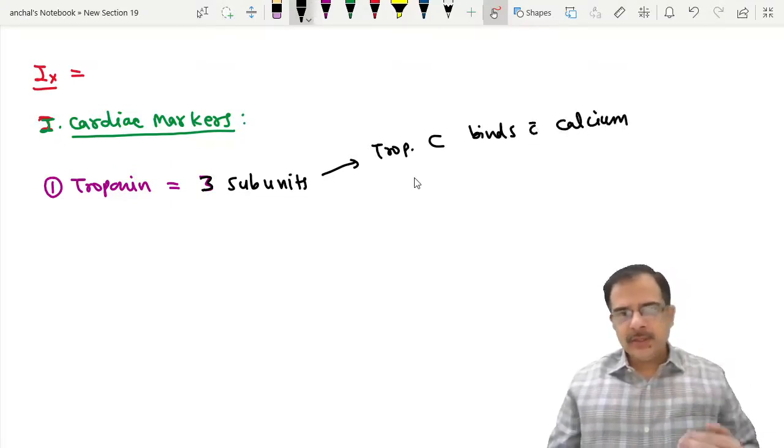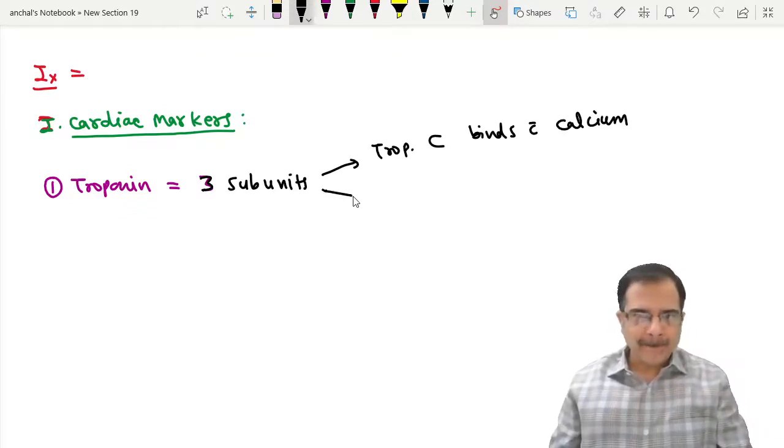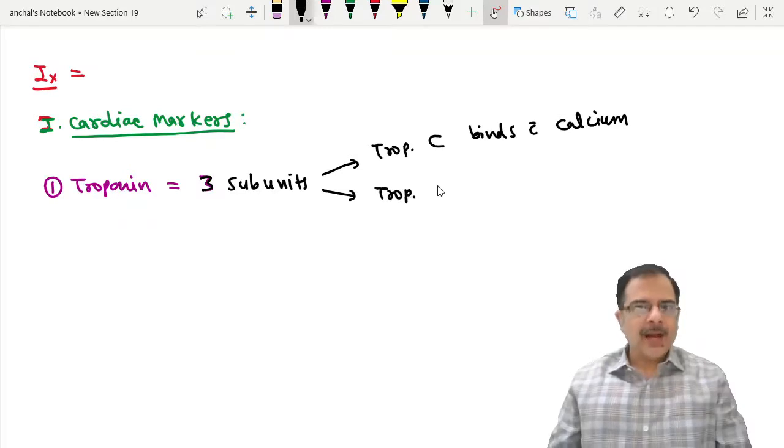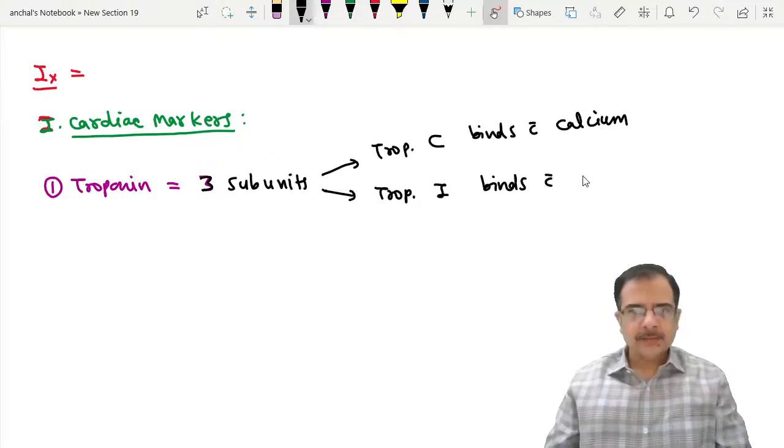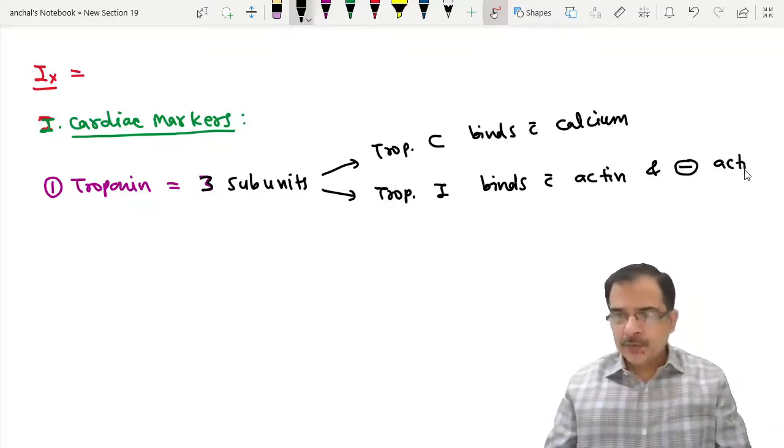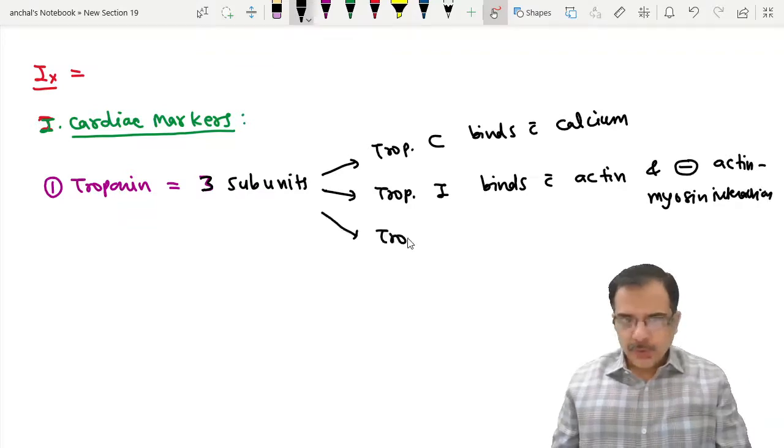Each subunit of troponin helps in cardiac contractility. Troponin I binds with actin of myocyte and inhibits. The name is I because it inhibits actin-myosin interaction.